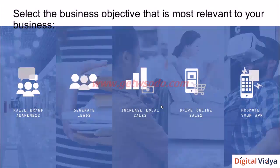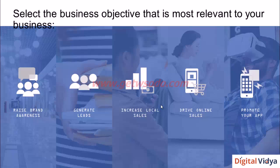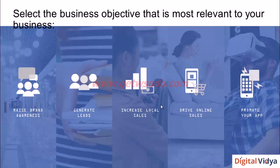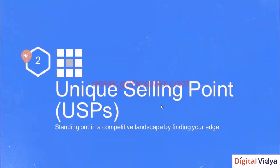Let's move on to a summary of all the business objectives we just discussed. These are the five key objectives: raising brand awareness, generating leads, increasing local sales, driving online sales, and promoting your app. Pick the single most relevant objective for your business — you could even pick multiple. For example, you could pick raising brand awareness as well as generating leads, or brand awareness and online sales together. Pick your objectives and write them down in your notebook. Now that you've defined your objectives, let's move on to understanding how we can stand out from competition — how to find those unique selling points or USPs that differentiate us from competitors.